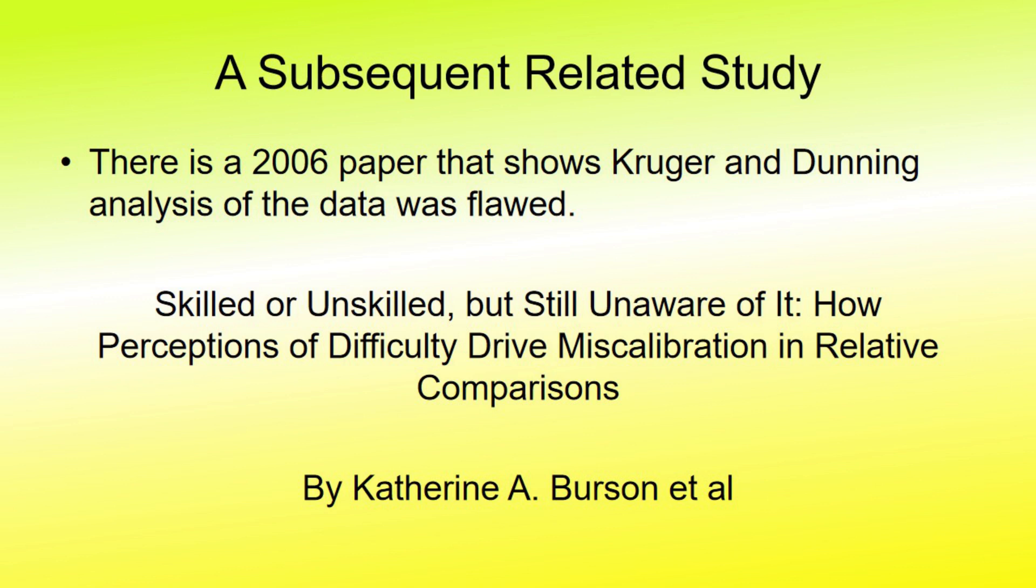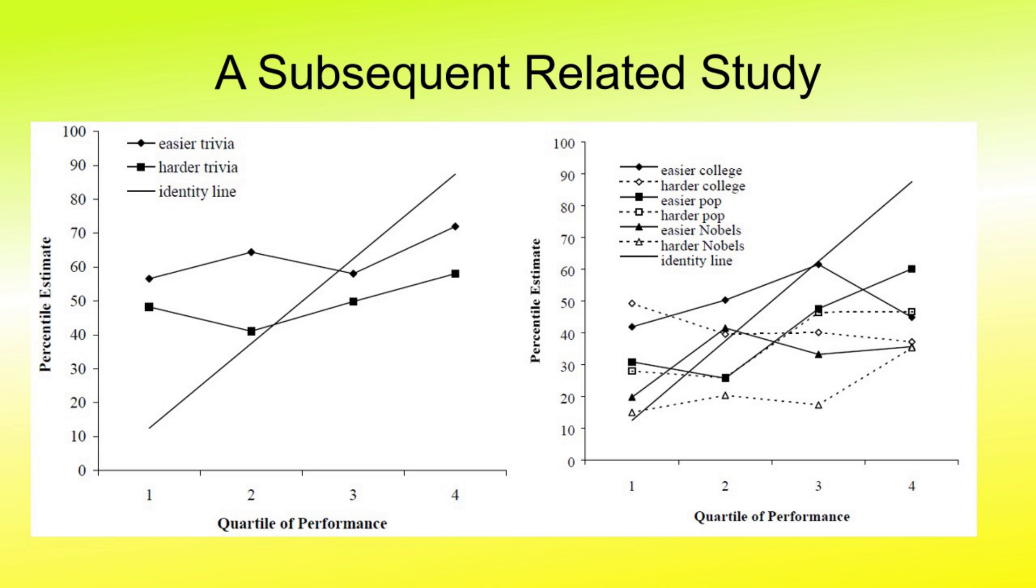This paper shows the effect of difficulty on the type of data presented by Dunning-Kruger, a factor they completely ignored. The results are clear that the higher the perception of the difficulty of the material, the lower the expectations of those being tested on the material. Both tables show these results.